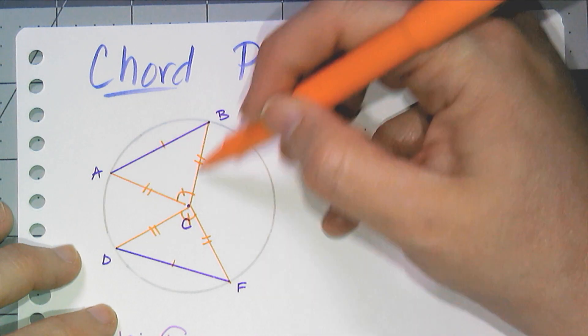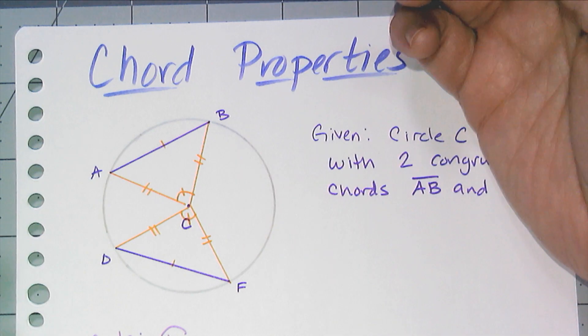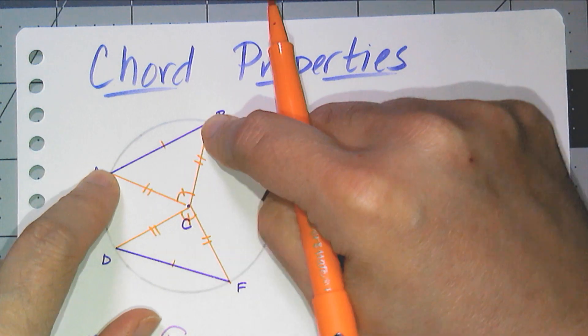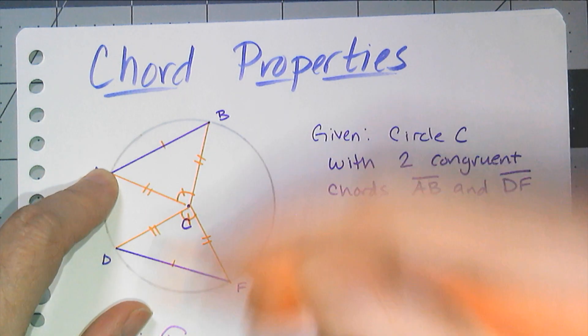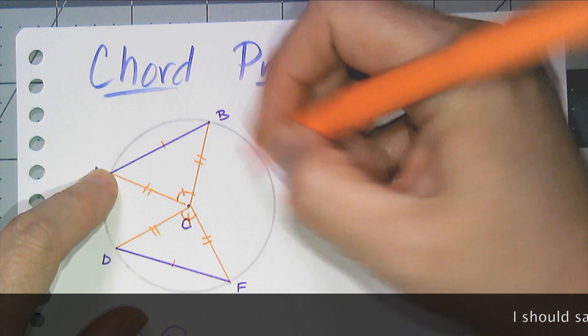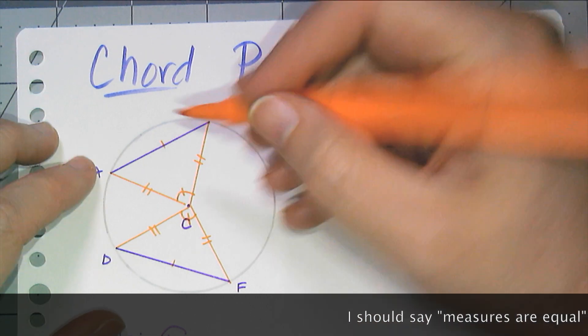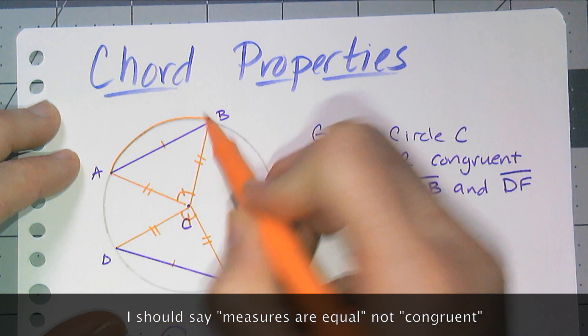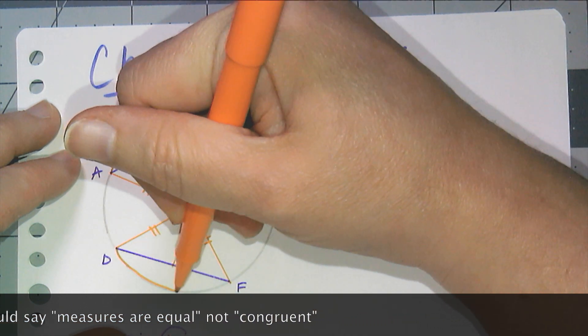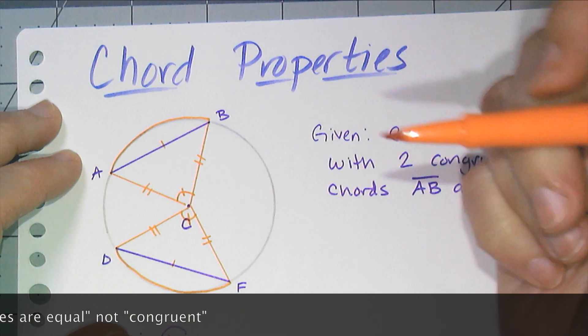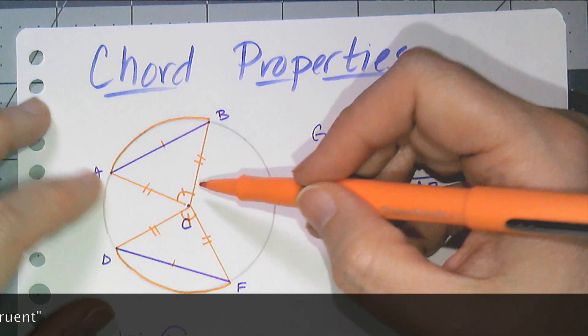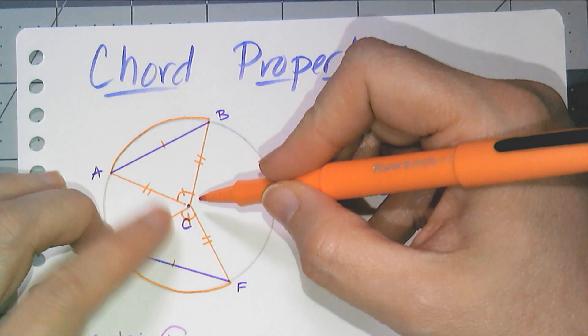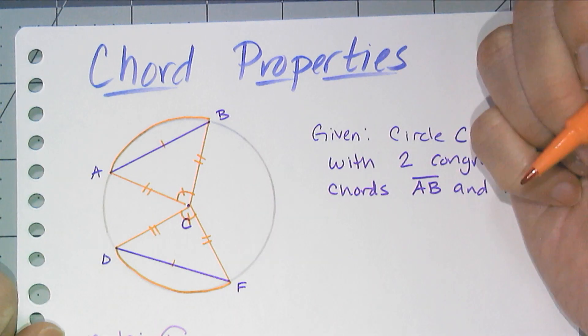So if I know these two angles are congruent, what are those two angles? Well, in the context of a circle, these two angles are central angles. So I have two central angles that are congruent. That means that the measure of arc AB has to be congruent to the measure of arc DF. Because I defined the measure of an arc based on the central angles. So congruent central angles means congruent intercepted arcs.